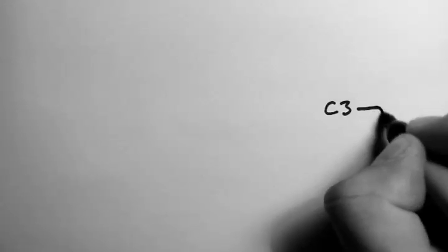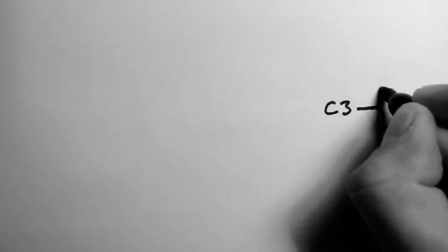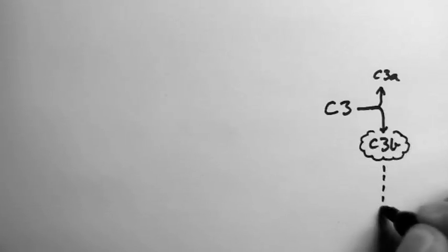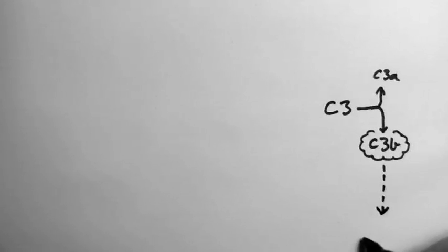Now, as I've discussed in previous videos, the complement system is all based around this molecule C3 and its conversion into C3a and C3b. C3b is a particularly important one because it's the one that continues on to form the membrane attack complex.